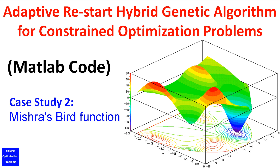I'm going to demonstrate how to use this general template code to solve the Mishra's BIRD function. This is the second case study in a series of videos demonstrating the power of my Adaptive Restart Hybrid Genetic Algorithm for Constrained Optimization Problems.